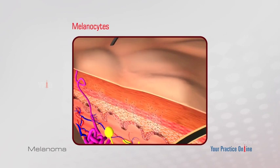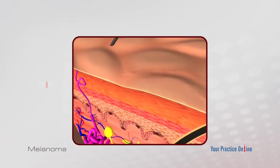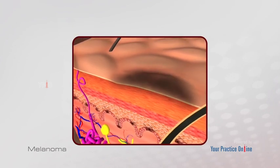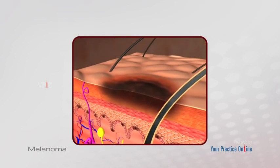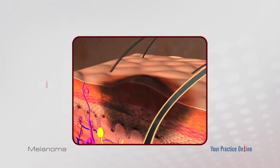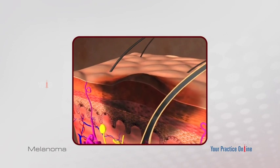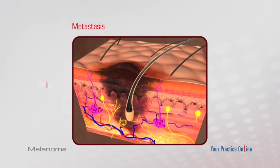It is the leading cause of death from skin disease. Melanoma begins on the surface of the skin and can grow down into the skin, reaching the blood vessels, and spread around the body. When cancer spreads, it is called metastasis.